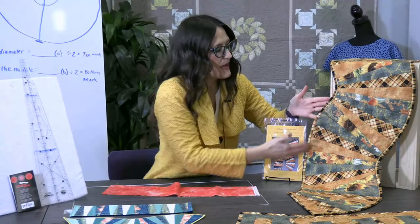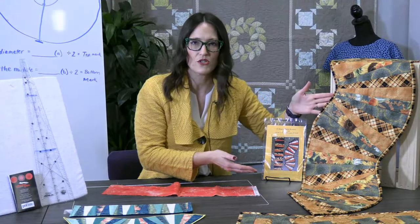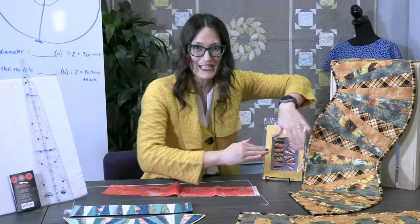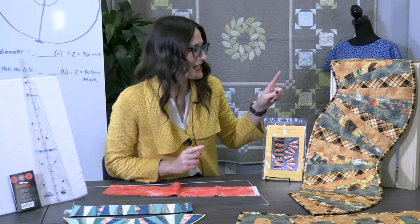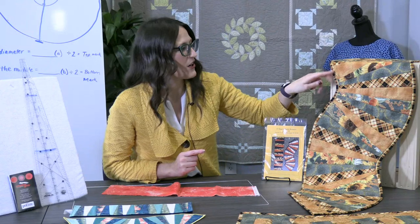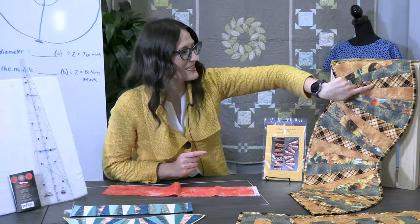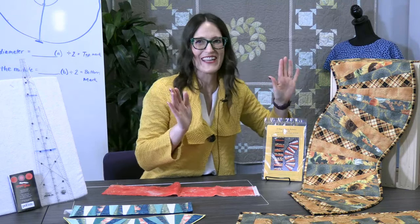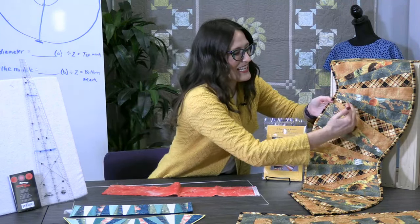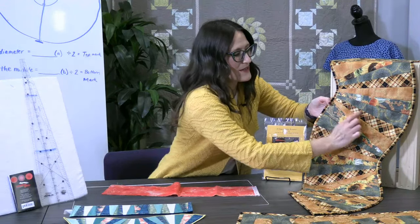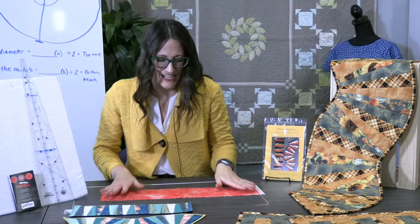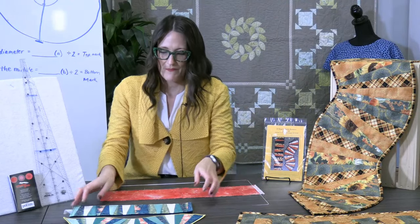Now when you do the binding on your table runner you want to make sure that you do use bias binding which means it is cut on the bias, means it's going to be flexible as it goes around these wonky curves. It does look like her fabric was actually printed on the bias so when she cut it out it was straight but the print is on the bias.